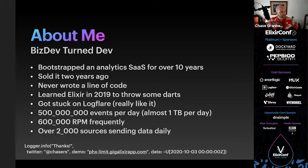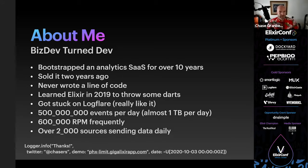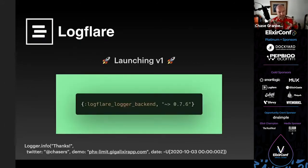Today we are ingesting about 500 million events daily, hitting about 600,000 requests a minute many times during the day, and there are over 2,000 sources — websites, Elixir apps, whatever — sending us data every day. It's grown quite a bit. It's been in beta, so it's been free, but I'm actually launching version one today.